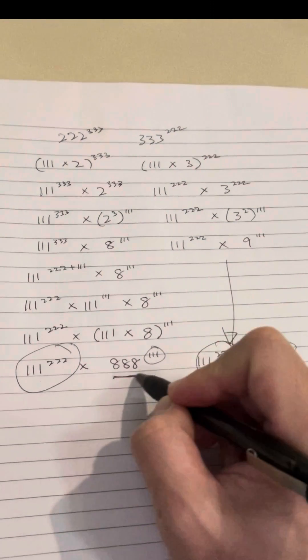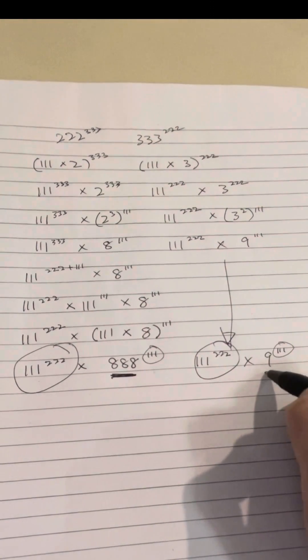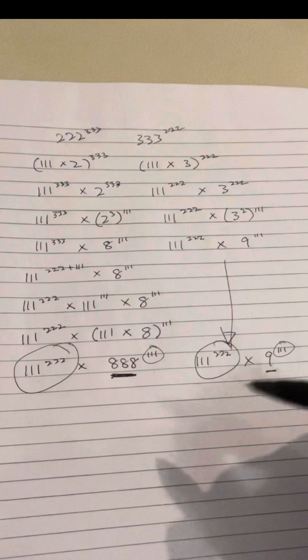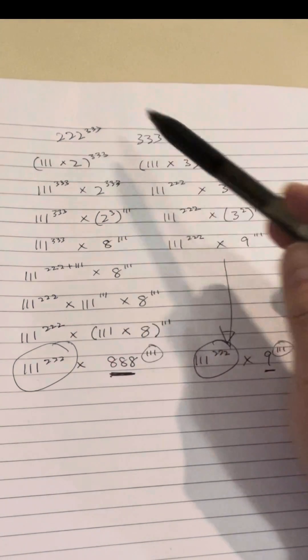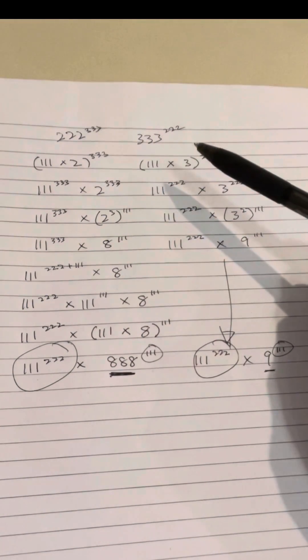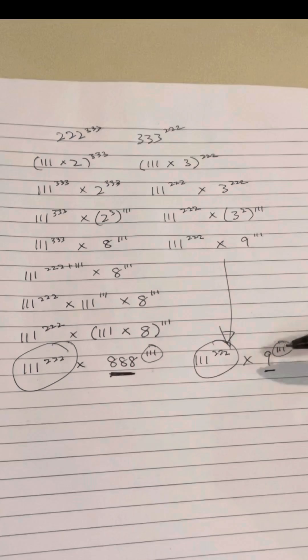So therefore, this number must be larger than this number. And it all comes from the fact that we recognize that 111 is actually a factor of both 222 and 333. So it's actually recognizing that common factor that led us to the solution.